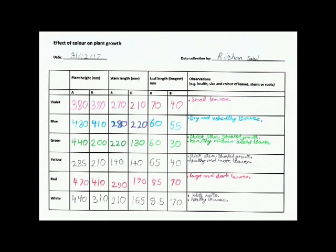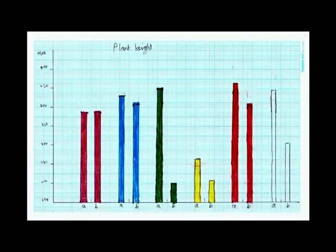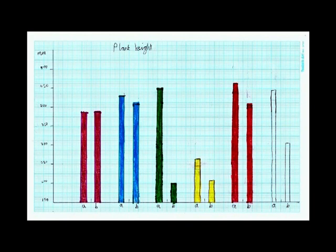Here are the results of my measurements using the data from this table. The tallest plant was in red surroundings and grew up to 470 mm in height. It also had the longest stem and leaves. The shortest plant was one of the ones growing in yellow light and it also had the shortest stem. The plants growing in red light grew to nearly one and a half times the height of the plant growing in yellow light.